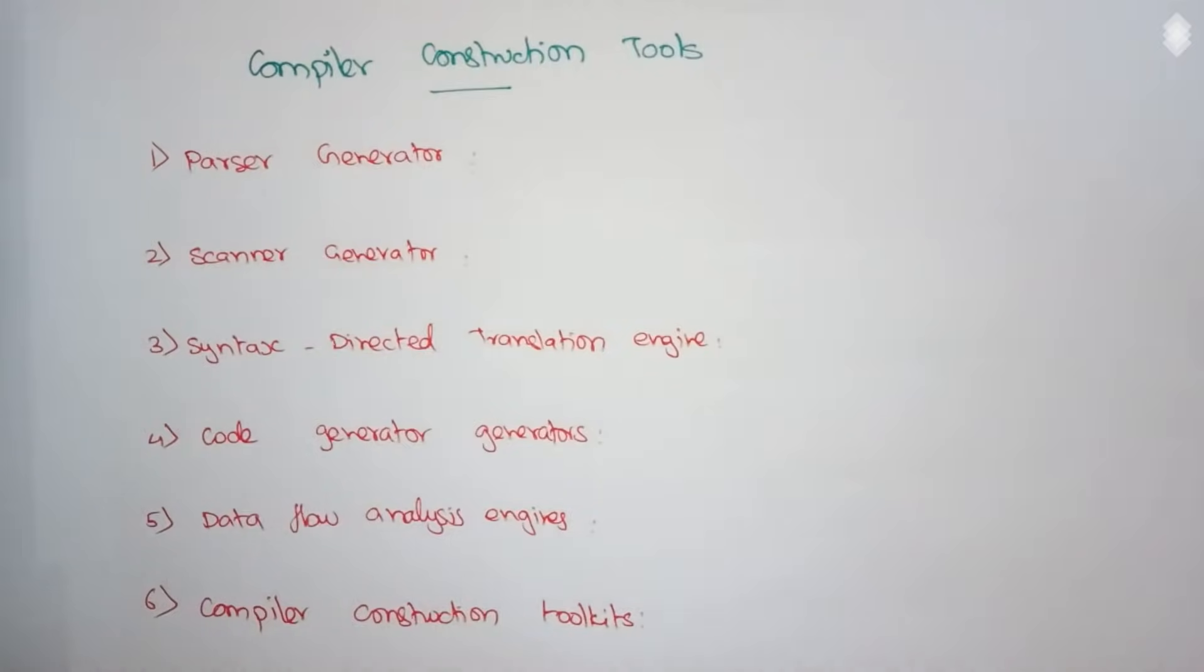Hello, in this video we're going to discuss different compiler construction tools. As discussed in the previous video, a compiler is not a single phase where it takes source code and directly converts to assembly level code. There are intermediate phases involved - it's a step-by-step process where the source code flows through different phases for this conversion.